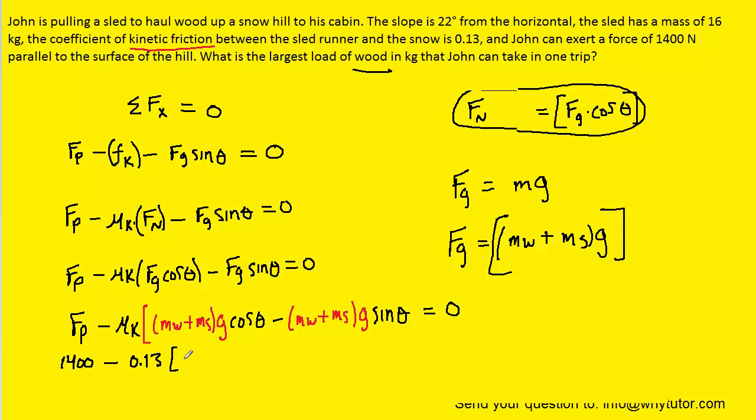Mu K had a value of 0.13. And then the mass of the wood we don't know. And if you'd like we could just call it x for now just to simplify it. The mass of the sled was stated to be 16 kilograms. So we can fill that in. And then we have multiplied by 9.8 times the cosine of the angle, which is 22 degrees.